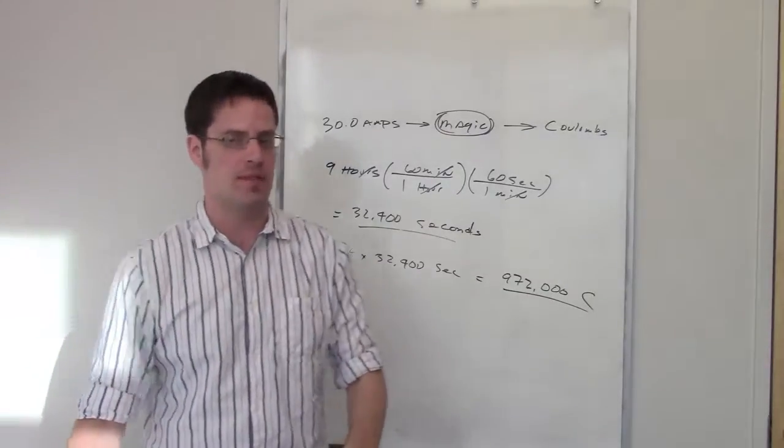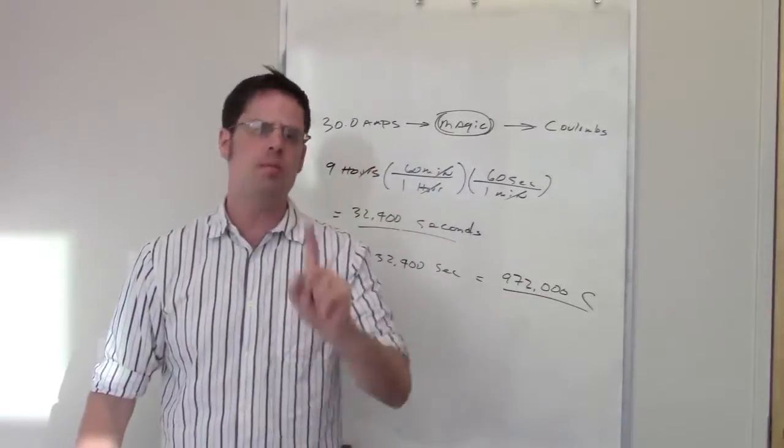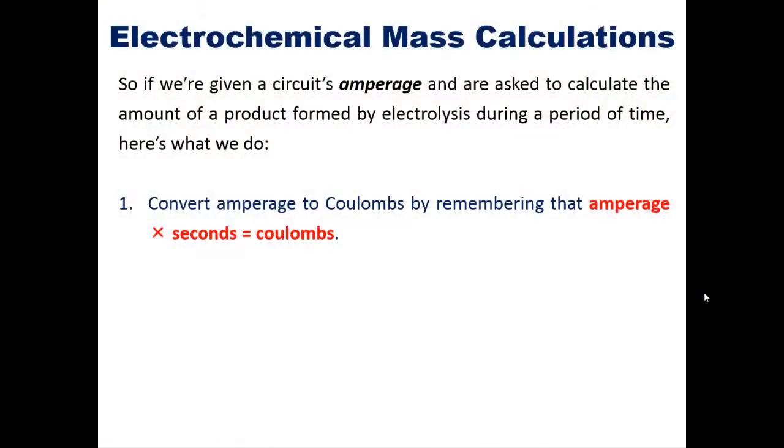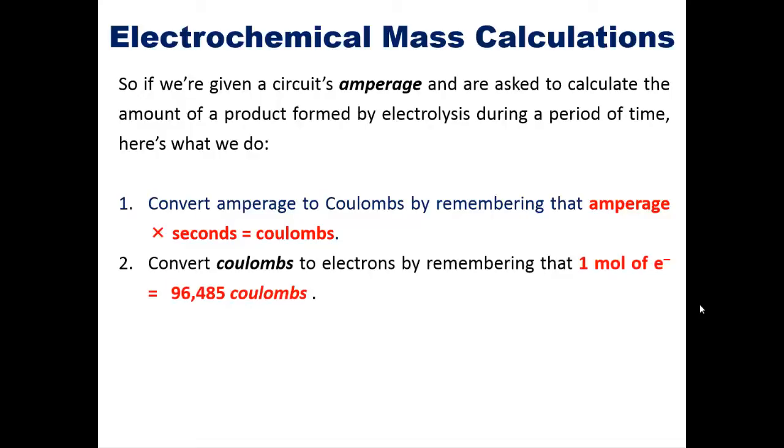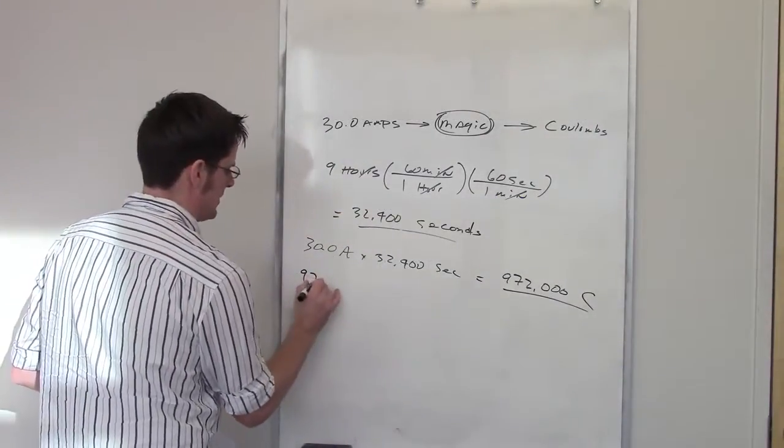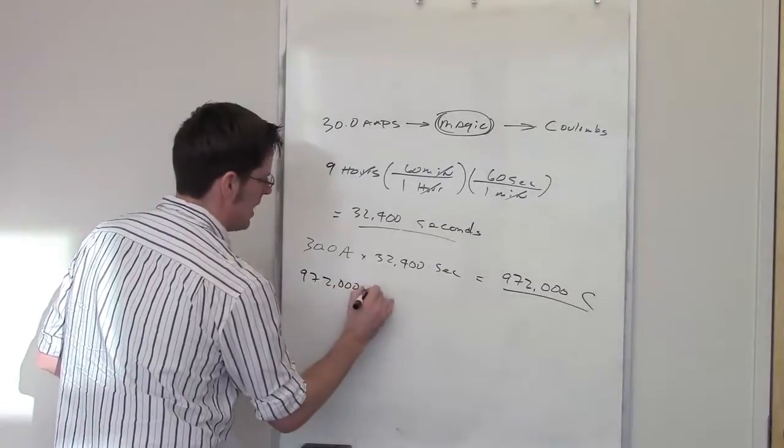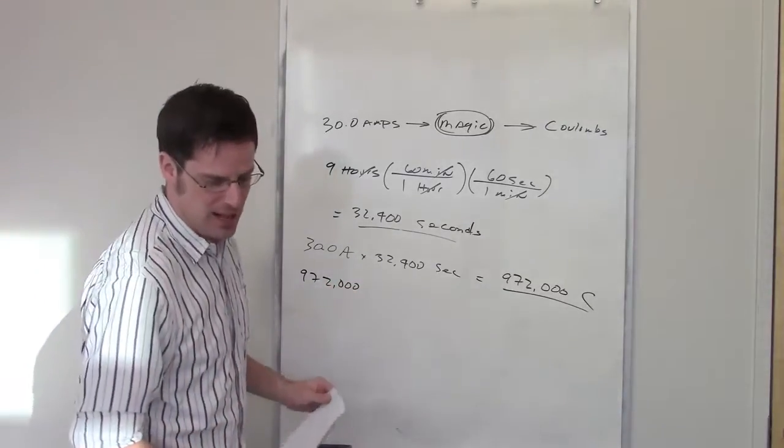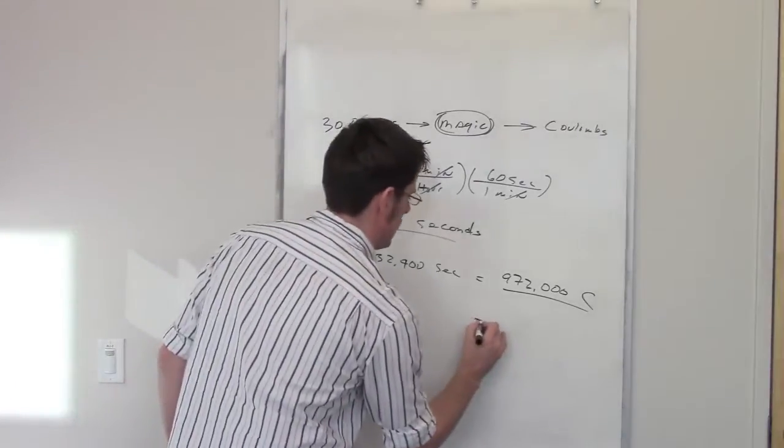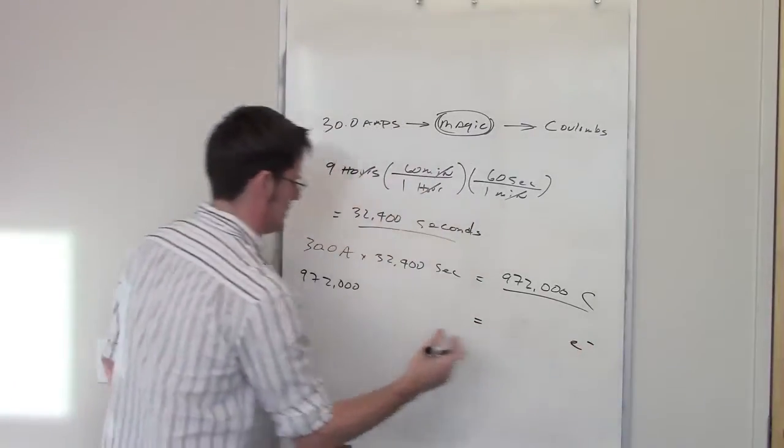So that's step one of this whole process. Now we'll go back to the PowerPoint slide and we'll take a look at step two. Step two says that once you've done this step one stuff, convert Coulombs to electrons by remembering that one mole of electrons equals 96,485 Coulombs. So I've got 972,000 Coulombs, and once again, I want to do dimensional analysis to convert that into electrons.